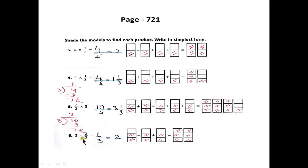Next is question number 6: 3 × 2/3. When we multiply, we get 6/3. Six divided by 3 is 2, and we will color the models accordingly.